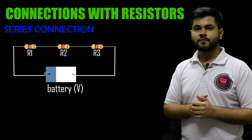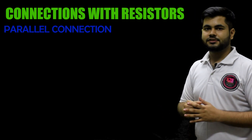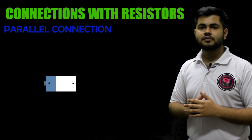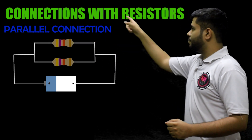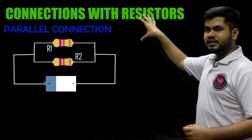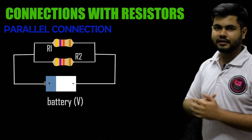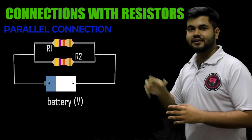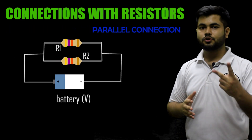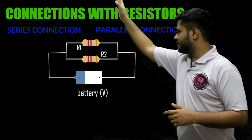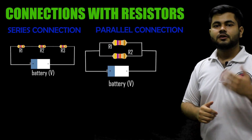Now coming to parallel connection — as the name suggests, there are two branches which are parallel to each other and the resistors are connected in them. So the two connections we have seen are series and parallel connections.